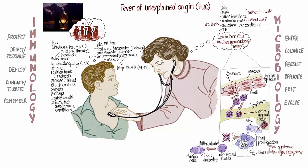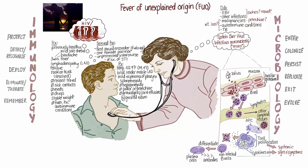On examination, the physician found multiple bilateral tender mobile lymph nodes in the cervical and axillary regions. Joel's throat was also slightly red or erythematous. In the abdominal exam, she could feel the tip of Joel's spleen, consistent with splenomegaly, although his liver felt normal. She examined Joel's skin for pallor, petechiae, or other rashes and saw none. Joel's joints didn't appear painful or swollen, and his genital exam was normal.